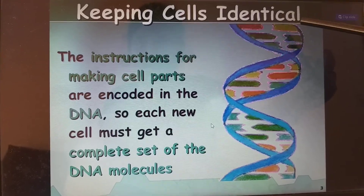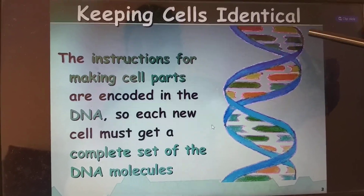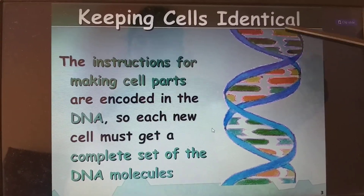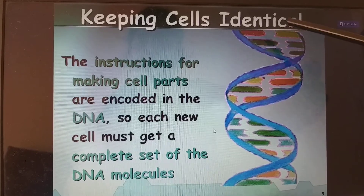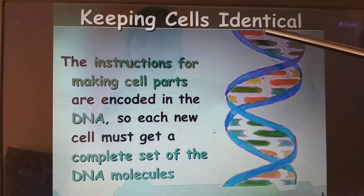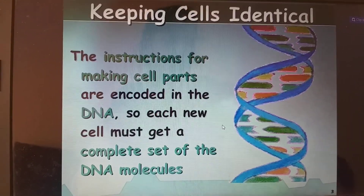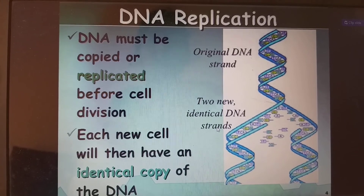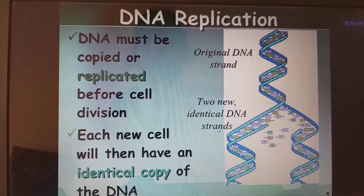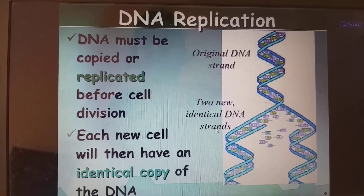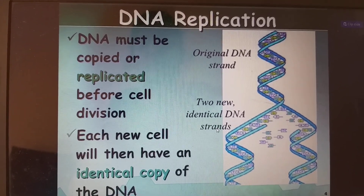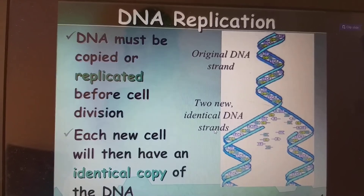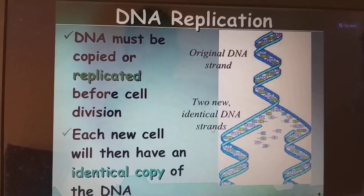Each new cell must get a complete set of DNA molecules. Our DNA is double-stranded, and each strand is attached to the other by hydrogen bonds. DNA must be copied or replicated before cell division.